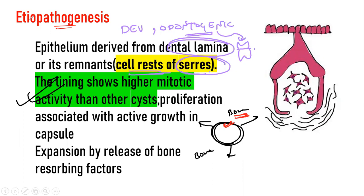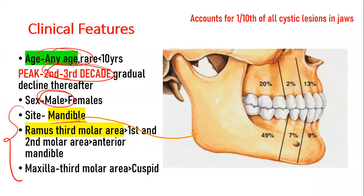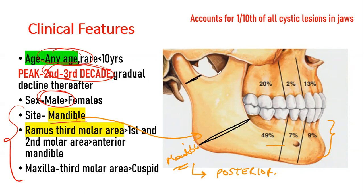Clinically, it can be seen at any age, but the peak is in the second and third decade. It is most commonly seen in males, and the most common site of occurrence is the mandible. As shown in the image on the right, almost 70% of the times it occurs in the mandible. In the mandible, the most common site is the posterior mandible, and in the posterior mandible, the most common site is the ramus third molar area — extending from the angle up to the condyle and coronoid.